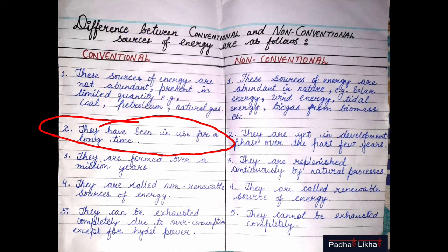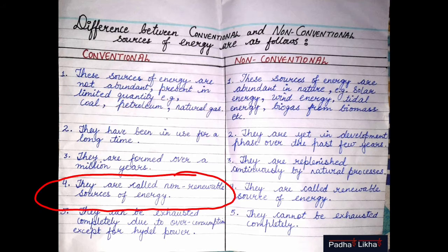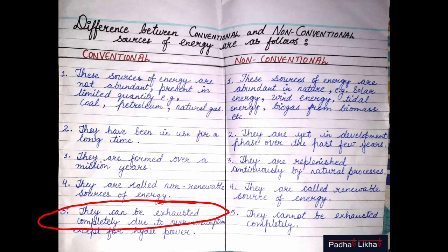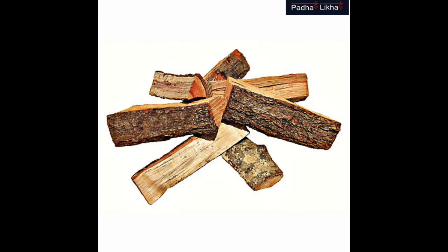Conventional sources are available in limited quantities. They are non-renewable sources and are fast depleting.